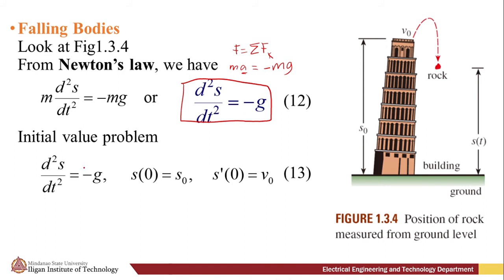We can use initial value problems on solving this model. We have the differential equation: the second derivative of s with respect to time is equal to -g. At time t = 0, we have the position of our body at s = s₀. And the first derivative of our position at t = 0 is the velocity or the initial velocity v₀ of our body.